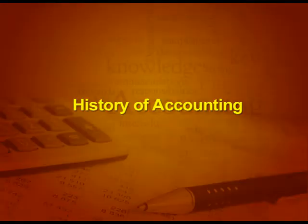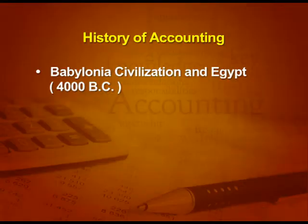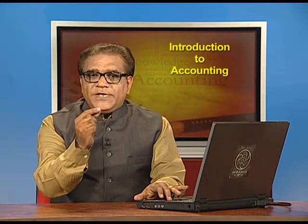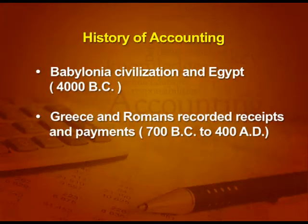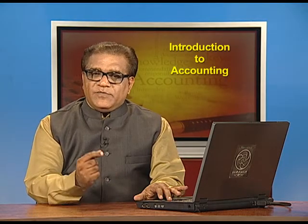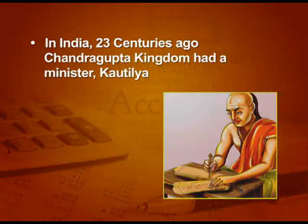Let us see how accounting started. There was Babylonian civilization and Egypt in 4000 BC — before Christ — when the first point of accounting started. Greece and Romans recorded receipts and payments from 700 BC to 400 AD. When accounting started in India, twenty-three centuries ago, in the Chandragupta kingdom, his minister Kautilya wrote Arthashastra, which deals with how to do accounting.